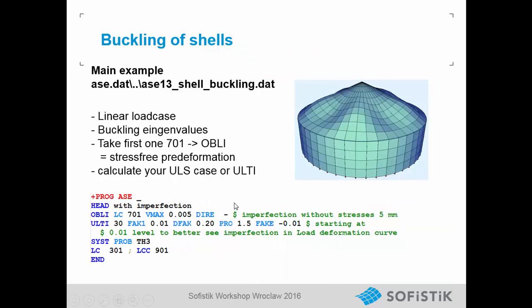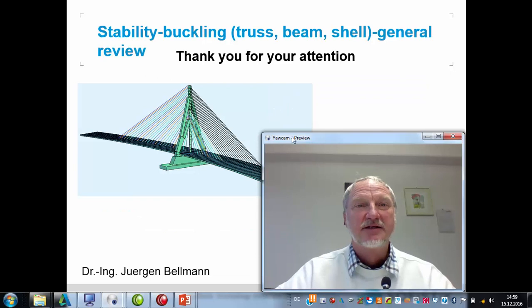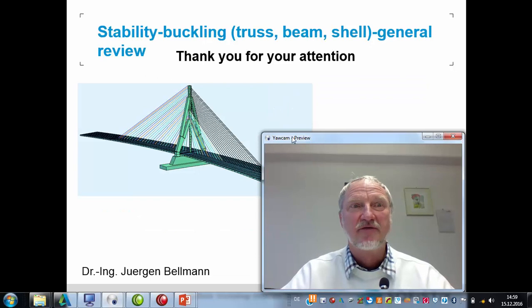Usually you use a stress-free pre-deformation for your geometric nonlinear analysis, and this can best be defined with the command OBLIQUE. For a stress-free pre-camber, we take load case 701 and say the maximum deformation shall be 5 mm — so the buckling eigenvalue shape 701 is scaled to 5 mm and applied stress-free. Now we have finished our overview of stability and buckling problems. Thanks for your attention.